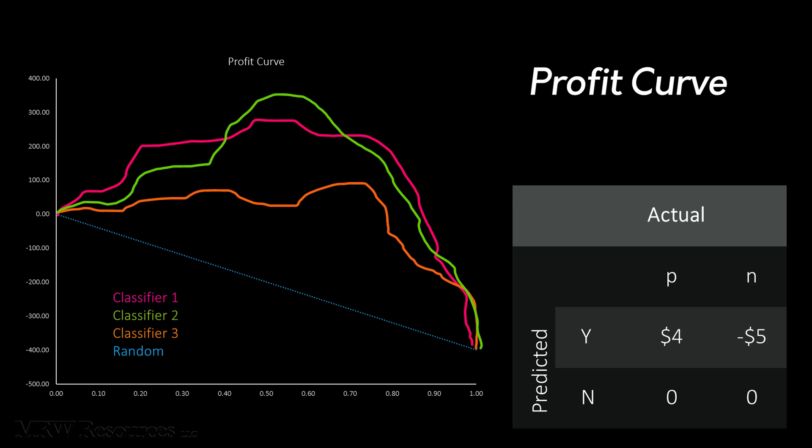because at those two points, you either don't send any offers and don't get any profit, or you send everyone an offer, in which case the model doesn't really matter. In between, you can see quite a bit of variation in performance between the models.